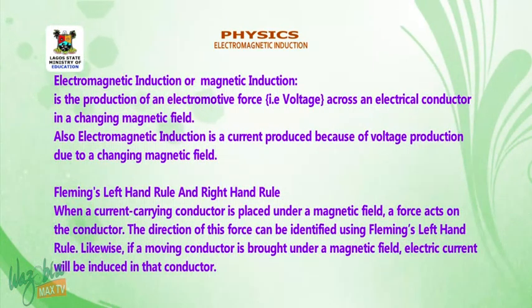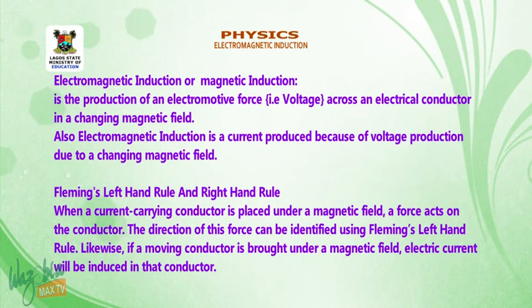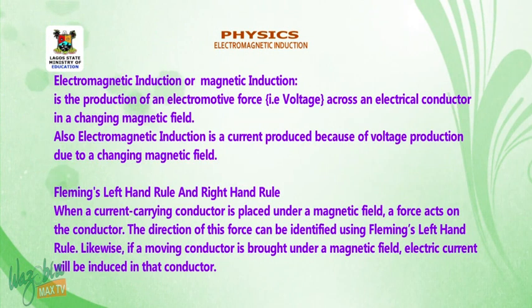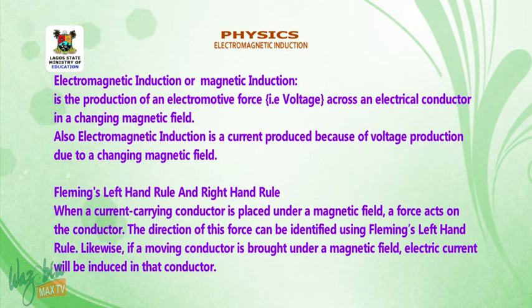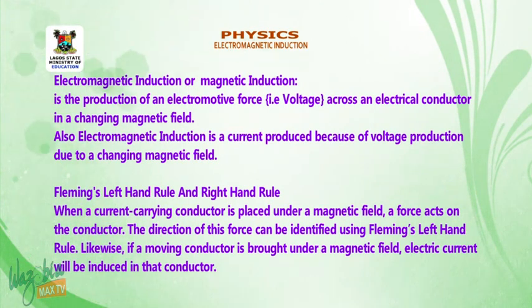Electromagnetic induction, or magnetic induction, is the production of an electromotive force — that is, voltage — across an electrical conductor in a changing magnetic field. Also, electromagnetic induction is a current produced because of voltage production due to a changing magnetic field.